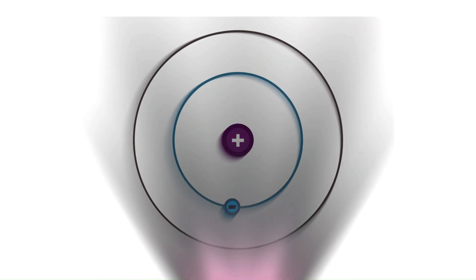But what if the photon's energy doesn't match perfectly? The electron simply ignores it, like a picky diner turning down the wrong dish. Now, let's take it a step further.